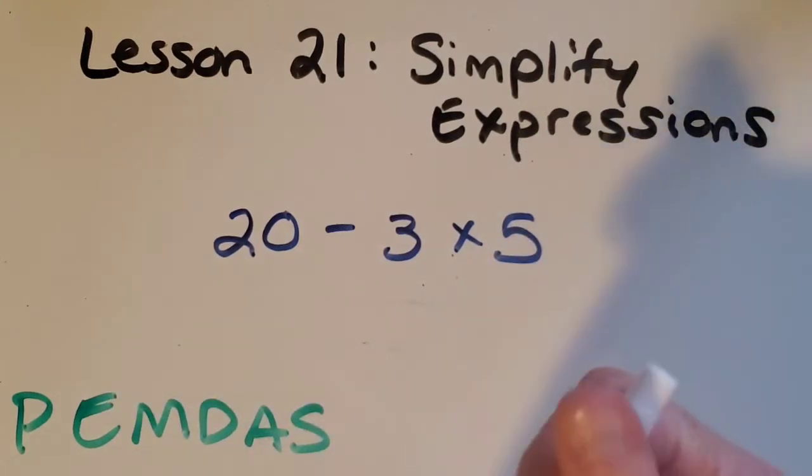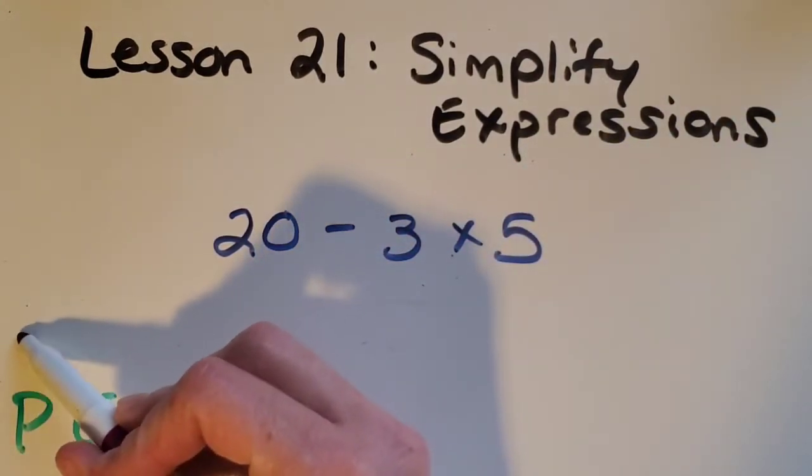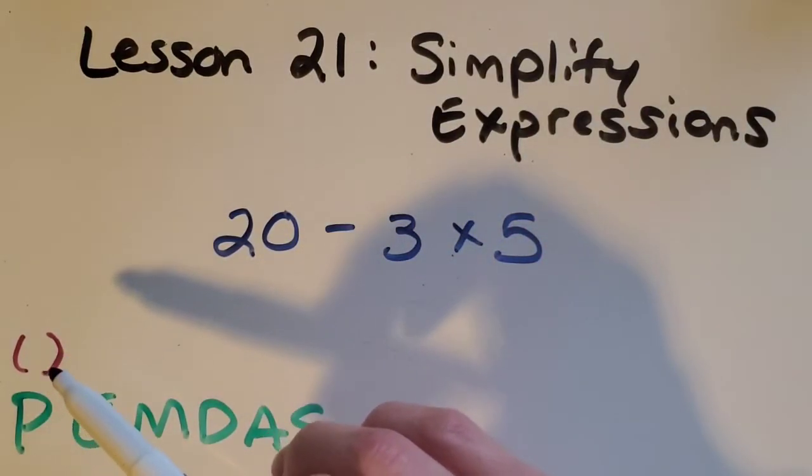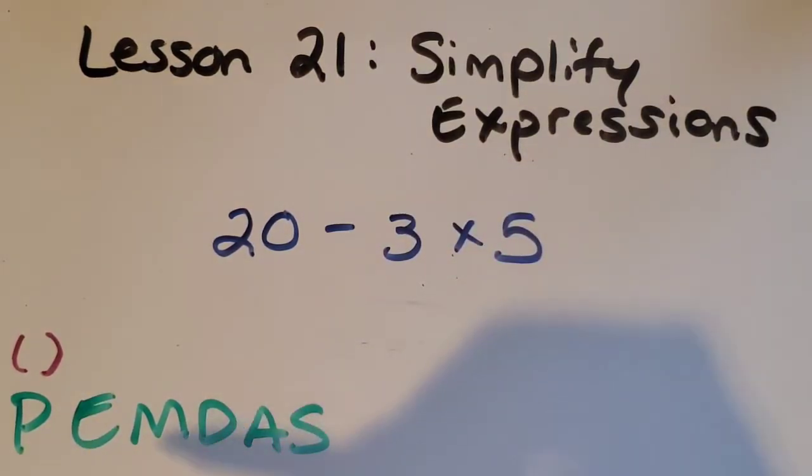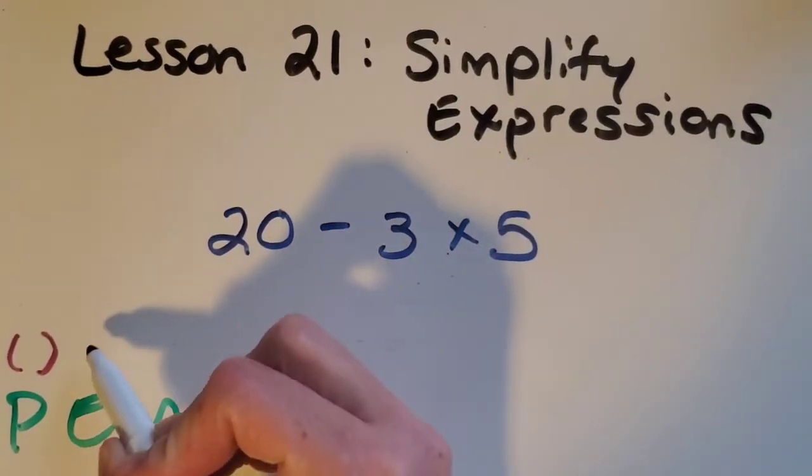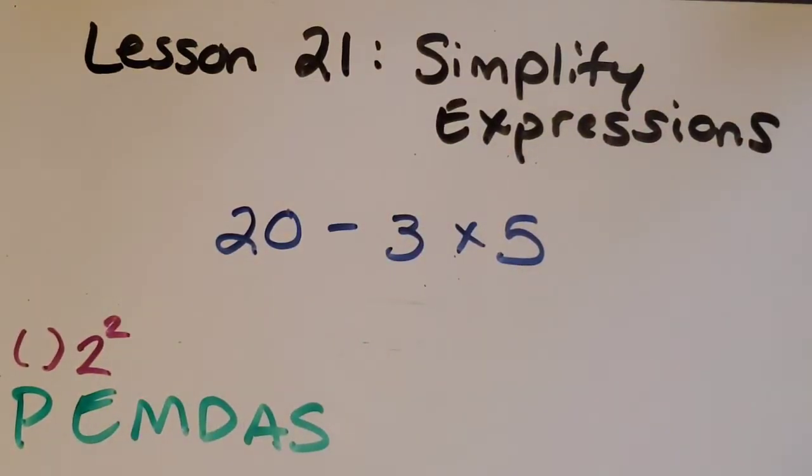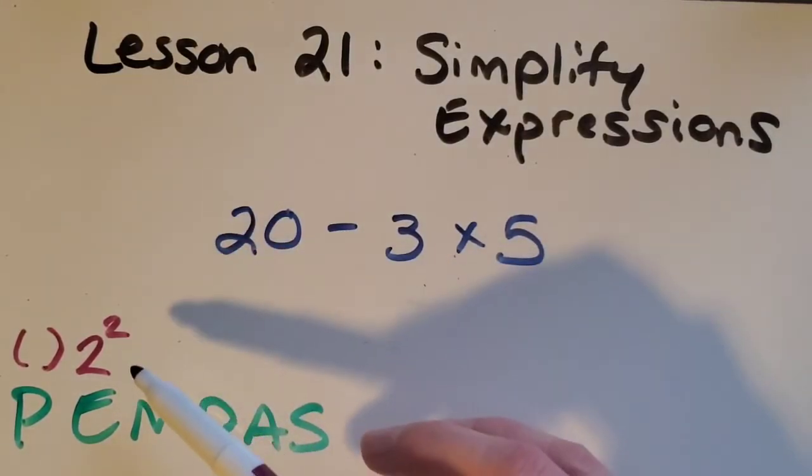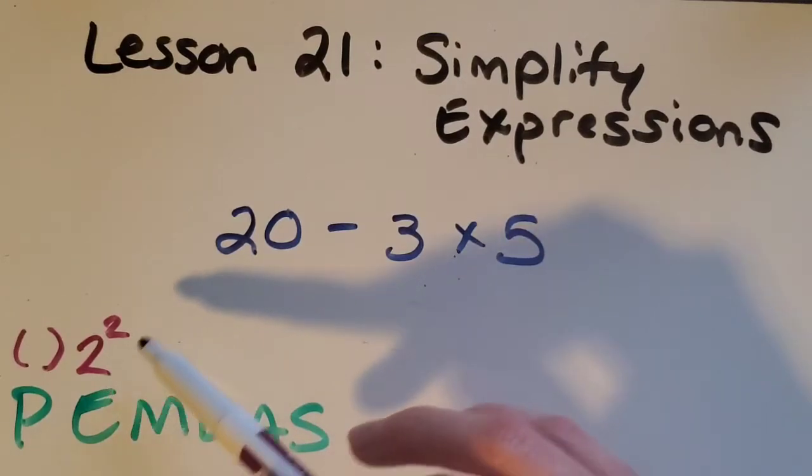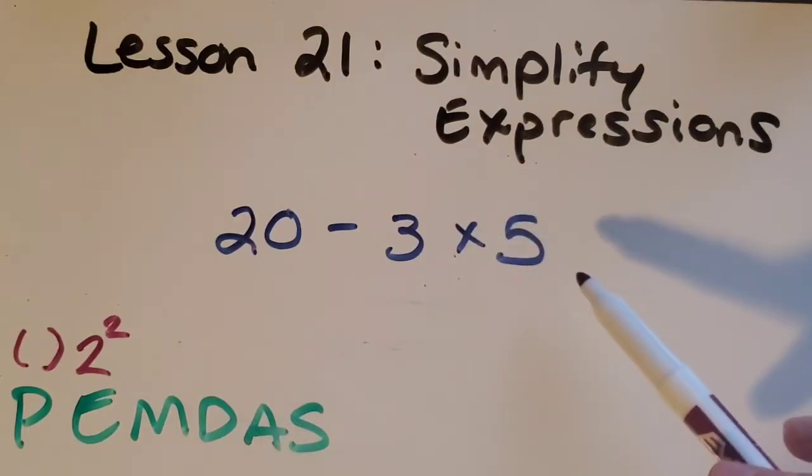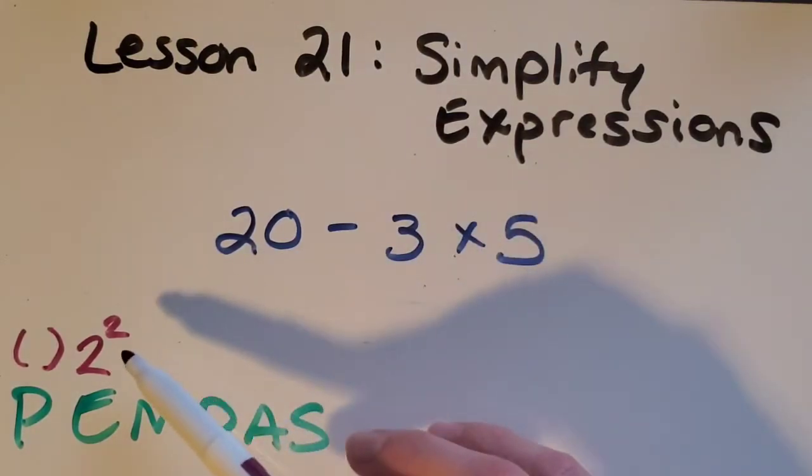So we need to understand what they mean though. The P stands for parentheses. If you see numbers and operations inside of parentheses you always do that first. Then the E stands for exponents. If you see a number like this with a little number to the corner there that's called an exponent. You're going to see exponents next year in sixth grade but I thought I'd go ahead and mention it so that you know that those would come next.